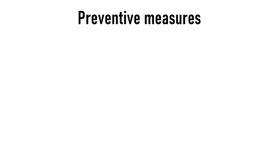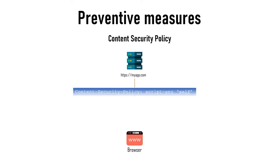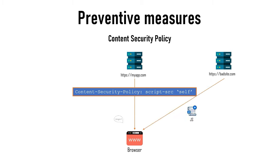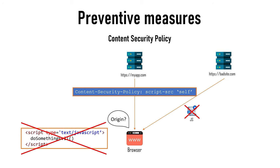One more tool to mitigate XSS is a browser security mechanism called Content Security Policy. With these policies described in HTTP response headers, developers can tell the browser which exact resources can be loaded in the web application. In this example, the server specifies that the page can only execute scripts coming from its own origin, so whenever the browser encounters scripts from another domain, they won't be loaded. Similarly, inline code blocks will not be executed, as there is no way for the browser to recognize their origin.